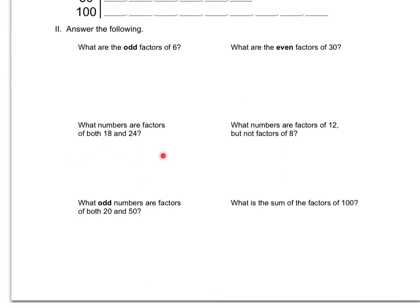What numbers are factors of 12 but not factors of 8? So you're going to compare the factors of 12 to the factors of 8, and any ones that appear as factors of 12 that are not also factors of 8, you'll list here. So just the ones that appear that are unique to 12 and not shared between 12 and 8.